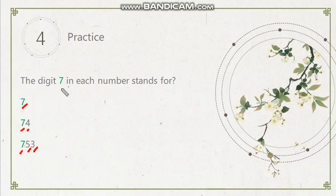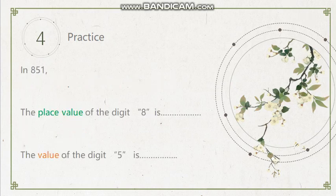Now, the digit 7 in each number stands for... What value? Okay. What value does it stand for? Now, number 7. So of course, it stands for 7. Nothing else. How about 74? As you read, 70. So it's actually 70 instead of 7. Okay. 70. And then 753. Okay. Again, we have 700. Okay. 700.